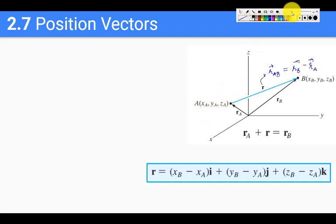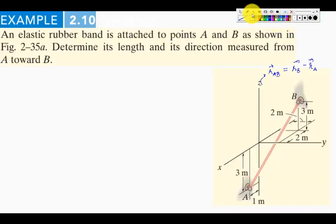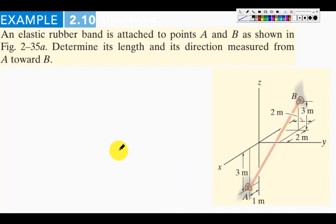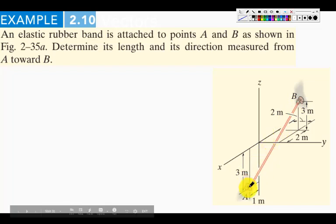Why are position vectors useful? The simple answer is that sometimes a force is directed along a position vector. For example, an elastic rubber band is attached to points A and B. We want to determine its length and its direction measured from A towards B. Because of this rubber band, point A is being pulled toward point B in the direction of the band.